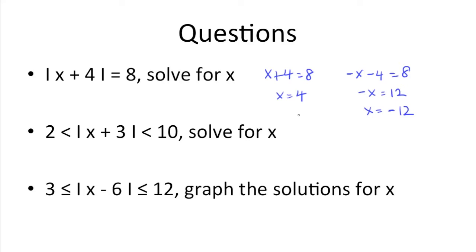So we get x is equal to 4 or negative 12. Now to double check, we just put 4 in: 4 plus 4 is 8, that works. And for negative 12, we get negative 12 plus 4 which is negative 8, and the absolute value signs get rid of the negative, so we have 8 equals 8.